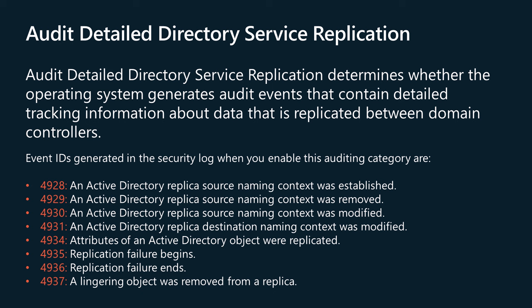Events in the security log related to this auditing item include: 4929, attributes of an Active Directory object were replicated; 4935, replication failure begins; 4936, replication failure ends; 4937, a lingering object was removed from a replica.